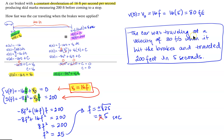Interpreting our results: the car was traveling at a velocity of 80 feet per second when it hit the brakes, and traveled 200 feet in 5 seconds. I hope you find this helpful.